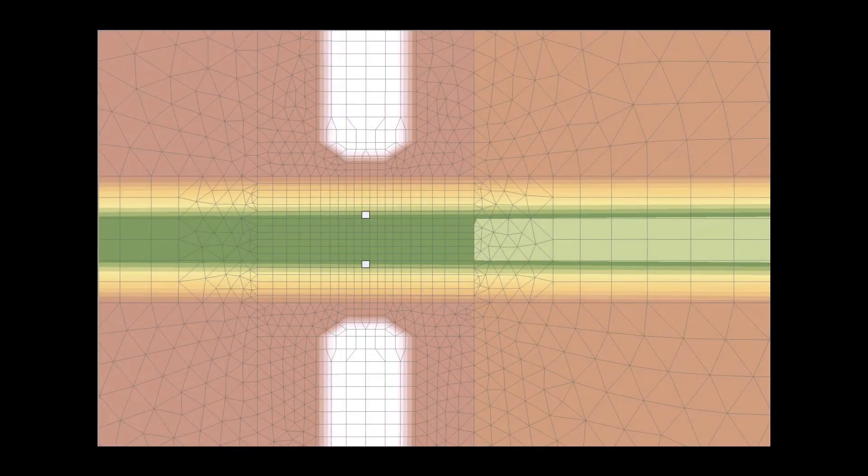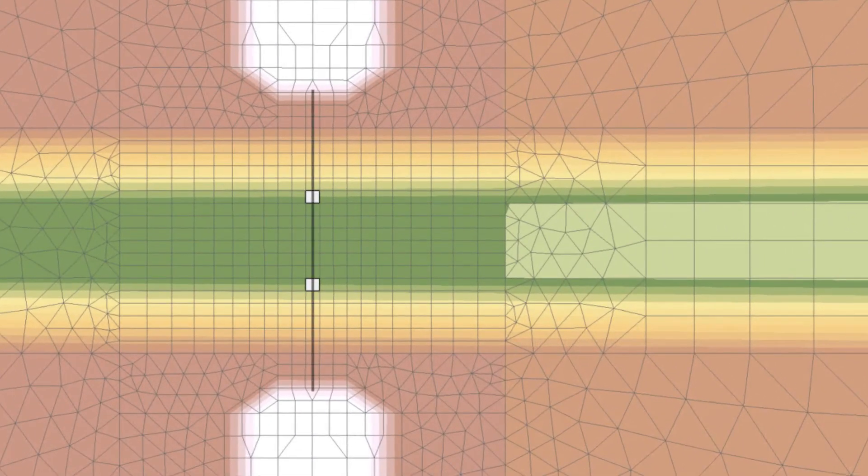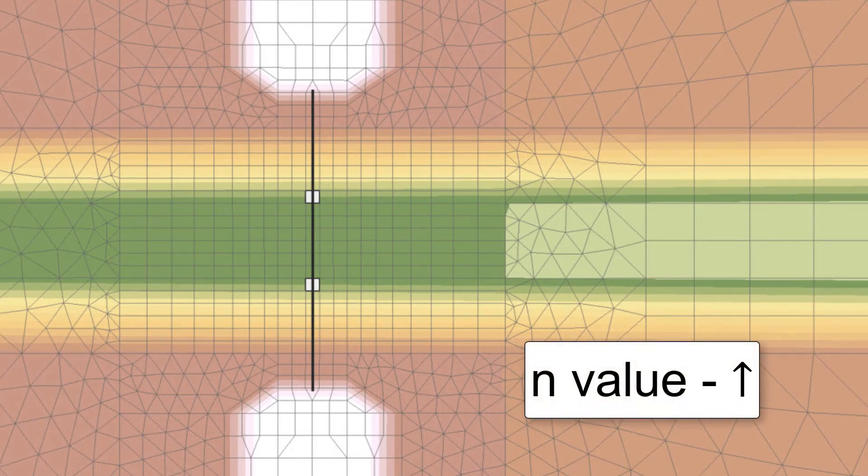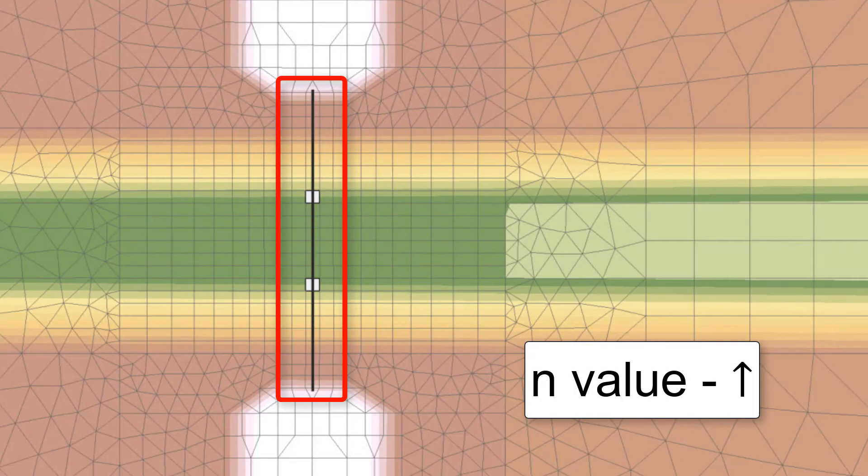The second method for representing bridge decks in SRH is to use an obstruction. This method is similar to how piers can be represented, and functions in the same way by increasing the roughness of elements to account for the drag force of a bridge deck.